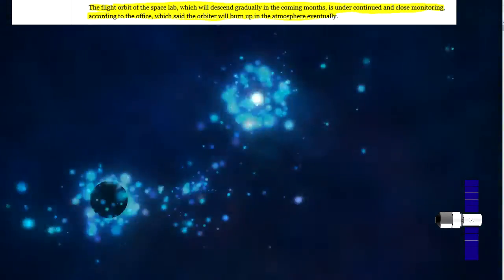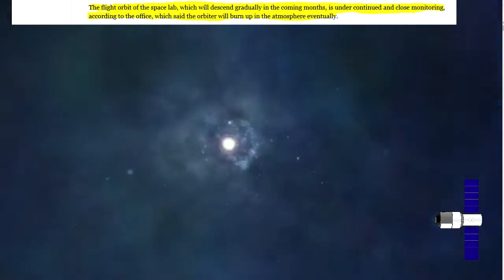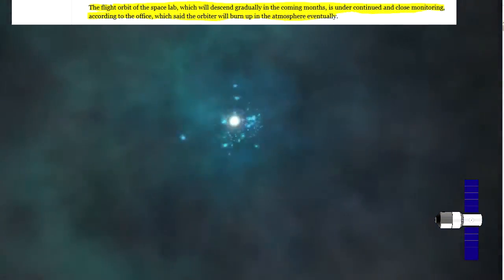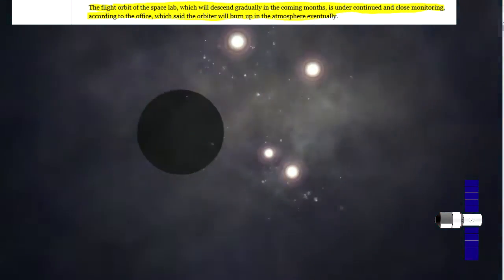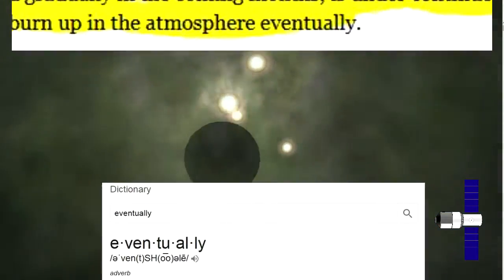Quoting from that official Chinese statement, the flight orbit of the space lab will descend gradually in the coming months, is under continued and close monitoring, and the orbiter will burn up in the atmosphere eventually. Eventually.